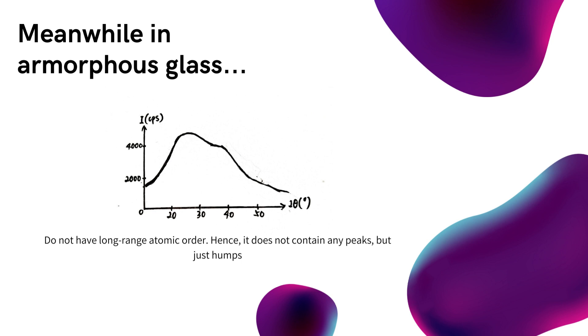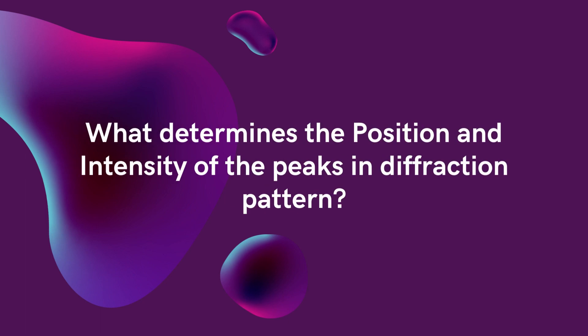Hence, the XRD graph does not have any peaks, but just humps. What determines the position and intensity of the peaks in diffraction pattern?